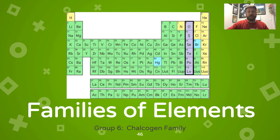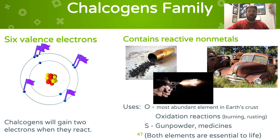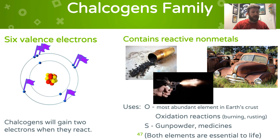If we move to group 16, an old name for it is the chalcogen family. All of the elements in this family have six valence electrons in their outer orbital, and they tend to gain two electrons when they react. This family contains some reactive non-metals. Oxygen is the most abundant element in the earth's crust because it reacts with things so well — anything rusty is iron reacting with oxygen, and anything that burns is a reaction with oxygen. Sulfur is used in gunpowder and medicines. Life needs both oxygen and sulfur to thrive.